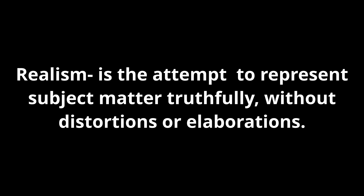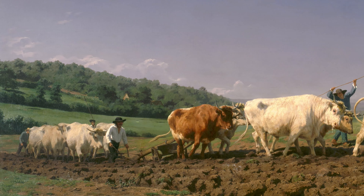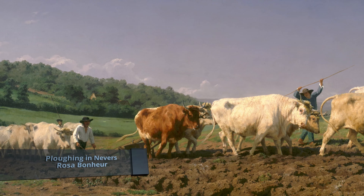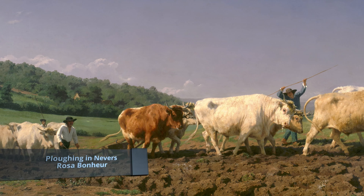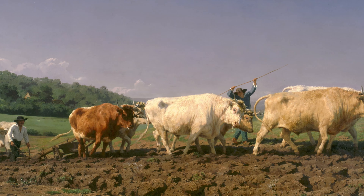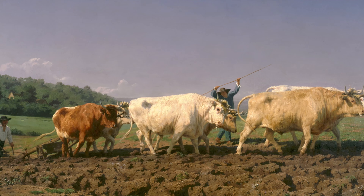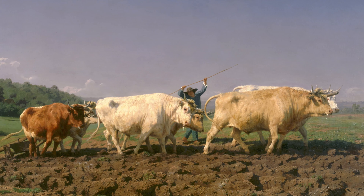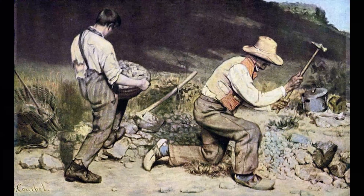Realism is the attempt to represent a subject matter truthfully, without any distortions or elaborations. Realism has been prevalent in the arts at many periods and can be in large part a matter of technique and training, and the avoidance of stylization. It can be described as linear, tight, or controlled.